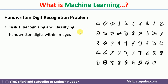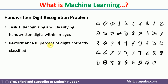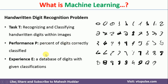The task in this case is to recognize and classify the handwritten digits within the image. Performance P is the percentage of digits correctly classified. The experience — or input to this particular system — is a database of digits with given classifications. We have to give the database of digits along with their classification, whether it is 0 or 1 and so on. If you go on giving more and more data, the performance of the model will keep improving. If it improves, we can say the system is learning; otherwise, it is not learning.